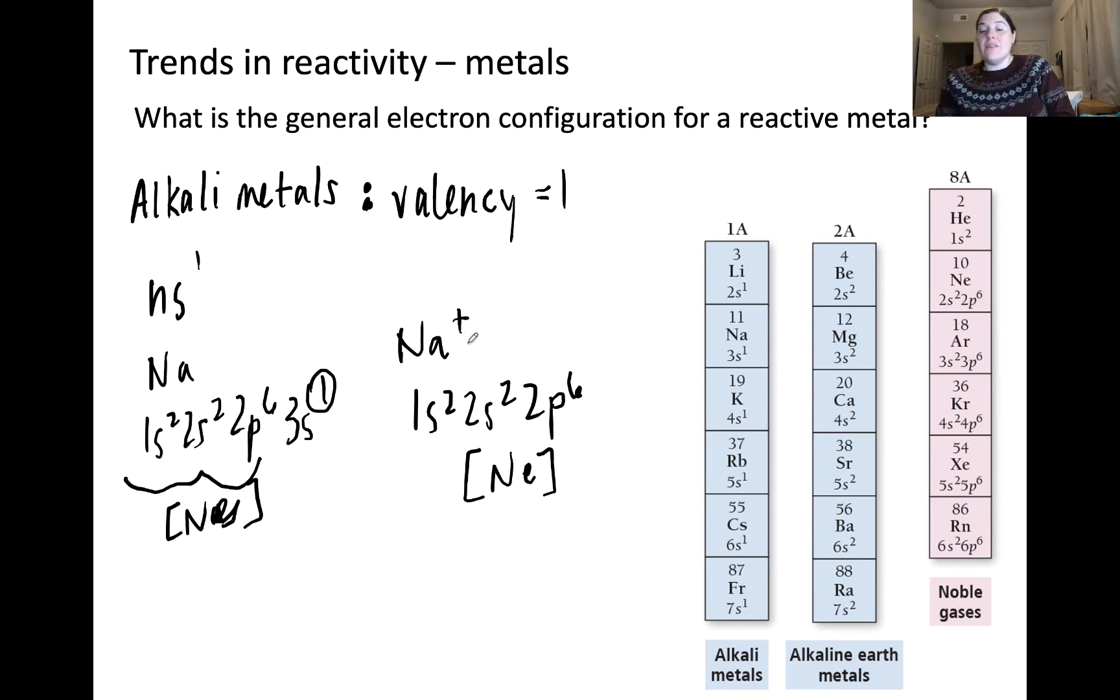That means that now sodium contains 10 total electrons instead of its original 11. Again, the reason why this electron loss is because now the new species, the sodium cation, now has 8 valence electrons. Again, associated with special stability.